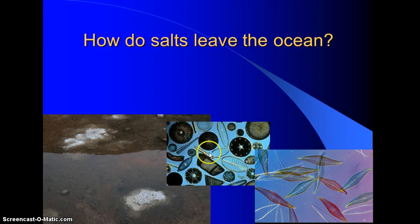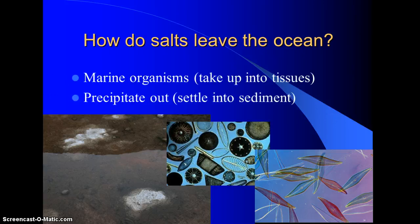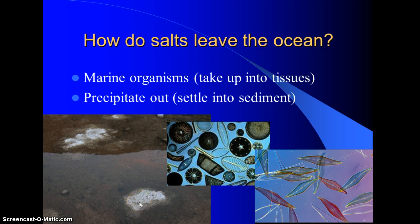How do salts leave the ocean? Diatoms and plankton — microscopic organisms — take up salts and store them in their tissue. Salts can also precipitate out of solution. Salt mines in the area are from ancient oceans that have evaporated. In a saltwater solution, you can also observe salt precipitate out and form a solid layer at the bottom — that's what it means to precipitate out of solution.